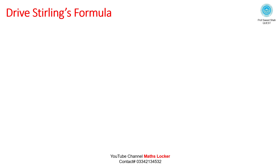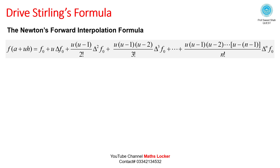To derive the Stirling formula, we start from Newton's forward interpolation formula: f(a+uh) = f(0) + u·delta f(0) + u(u-1)/2! · delta² f(0) + u(u-1)(u-2)/3! · delta³ f(0) + ... + u(u-1)(u-2)...(u-n+1)/n! · delta^n f(0). Call this equation (a).